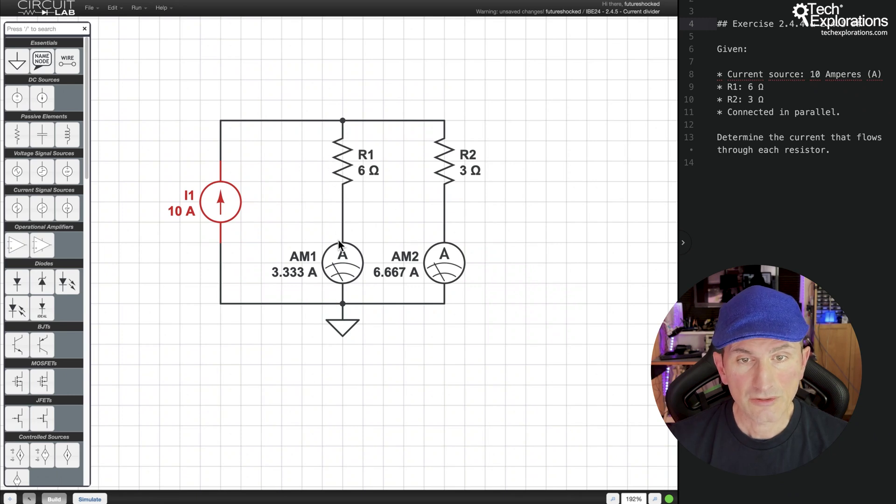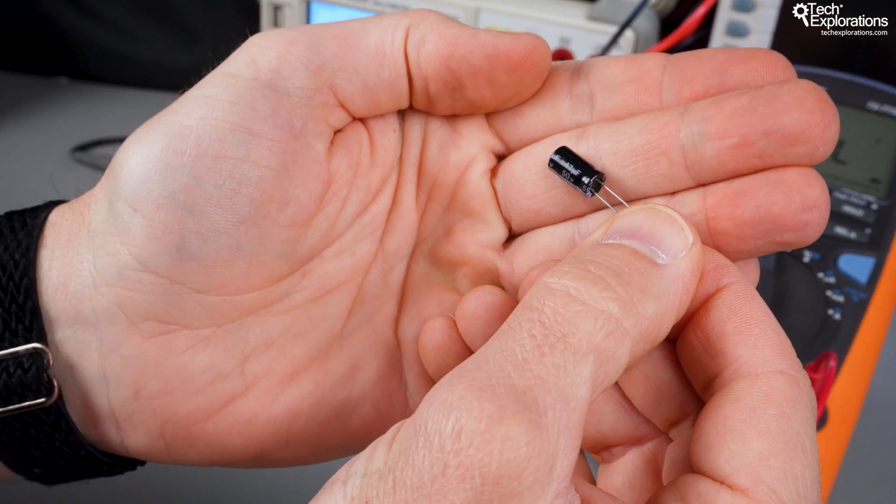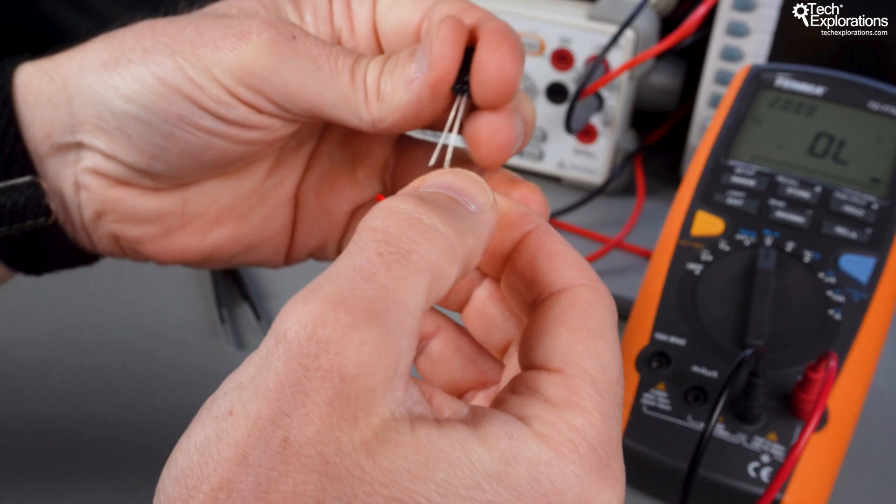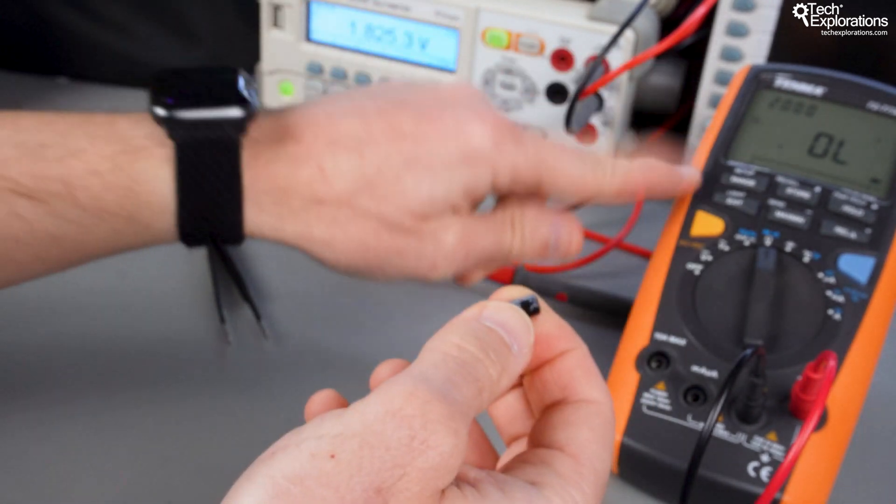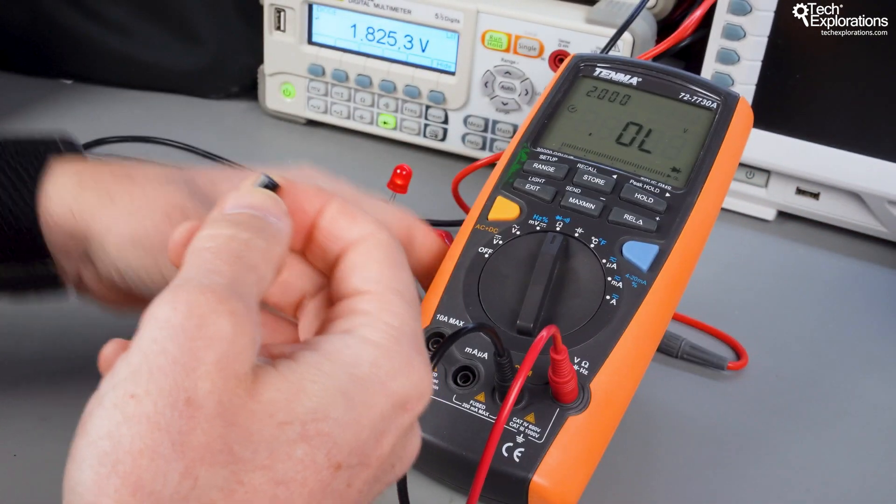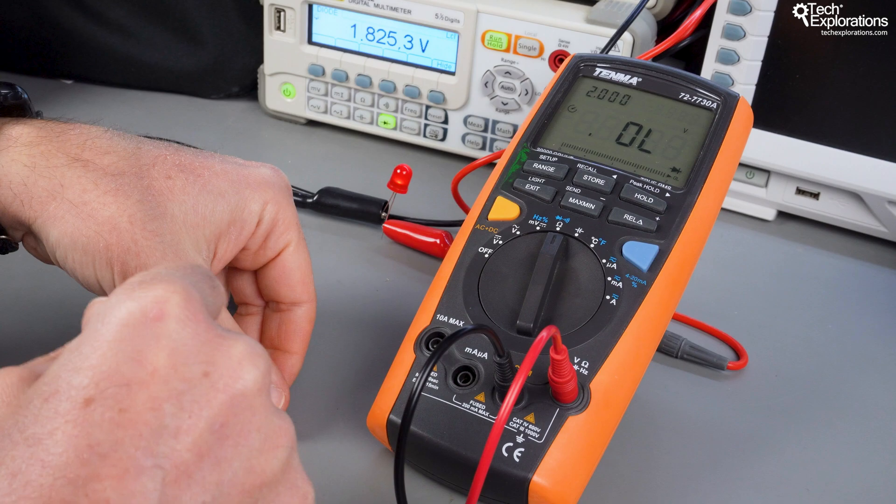We'll also be using circuit simulation software. Simulators let you design and test circuits virtually before building them in the real world, which is a huge time saver and helps avoid costly mistakes. Finally, we'll get hands-on with real-world components and instruments like the multimeter and oscilloscope. These tools allow you to measure and troubleshoot circuits, translating theory into practice.